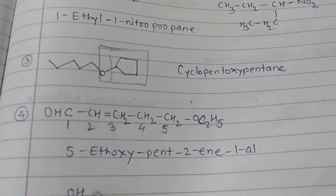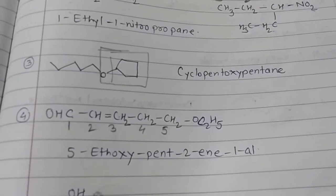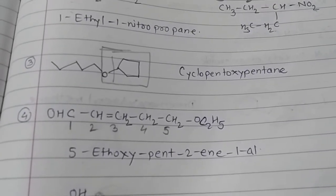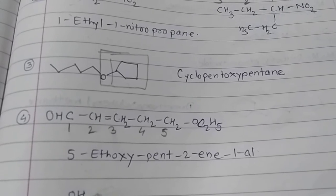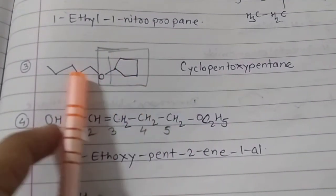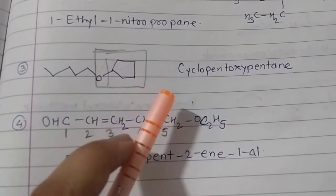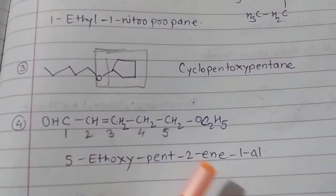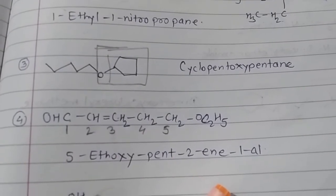The next one is an ether — a cyclic ether and an acyclic one. So the name is cyclopentoxypentane.